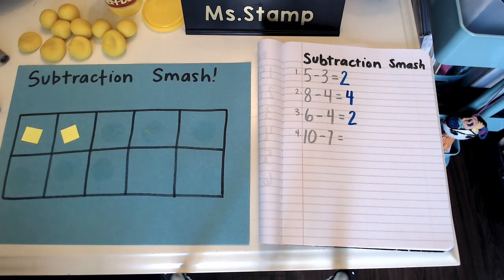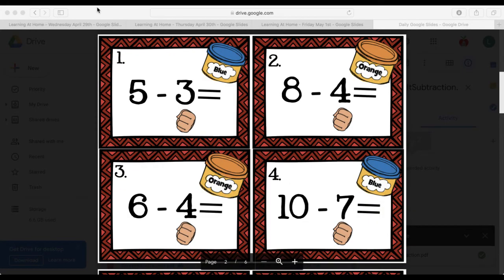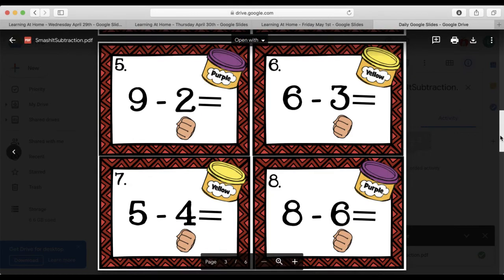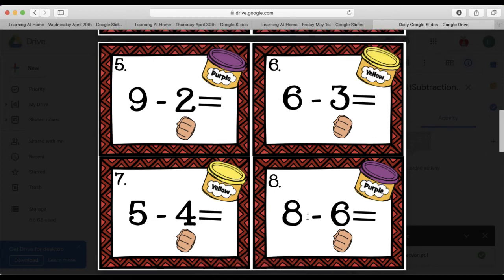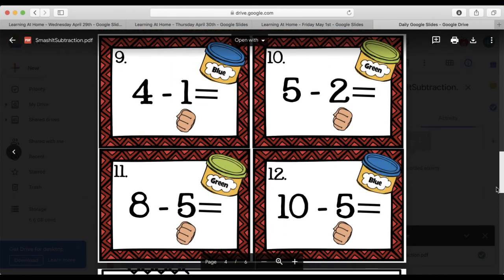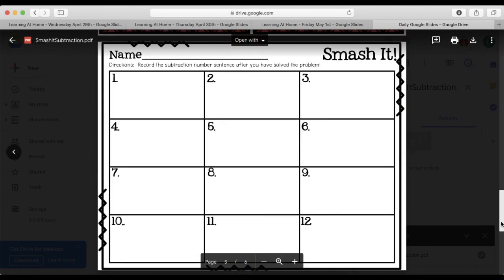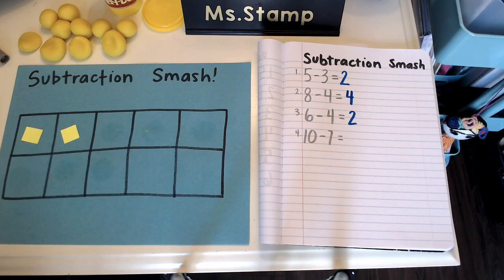All right, the rest of the problems are on the link. I will show that to you one more time. So I wrote those four on the piece of paper, and here are the next four. So you're going to do nine minus two, six minus three, five minus four, eight minus six. And here are four more: four minus one, five minus two, eight minus five, and ten minus five. All righty, have fun smashing play-doh!